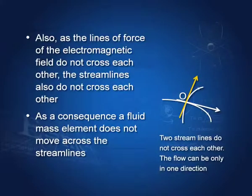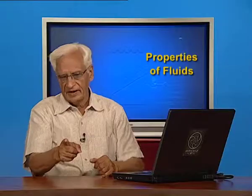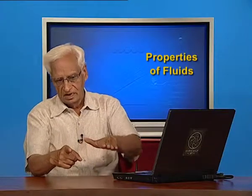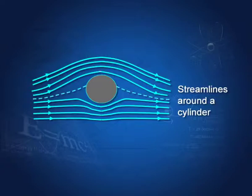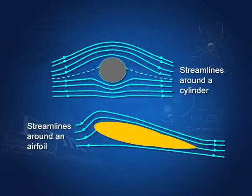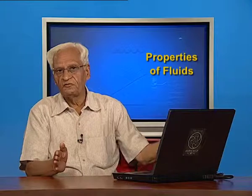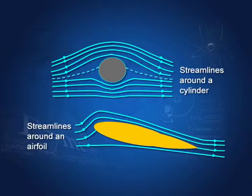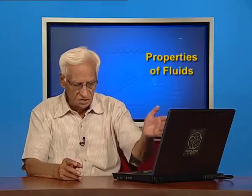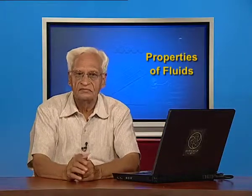Here are two more examples of streamlines. Suppose water is flowing and we have a cylindrical object in its path. The water will flow over it — this is a cylinder and water flows over it orderly in streamlines if the flow is not at very high speeds. Here is an important shape called an aerofoil or airfoil. If this is in the way of the fluid flow, then the streamlines will take the shape of going over it and under it, but they will remain streamlines. The motion of the fluid is said to be turbulent when it is highly unsteady, as in the example of river Ganga near its source.